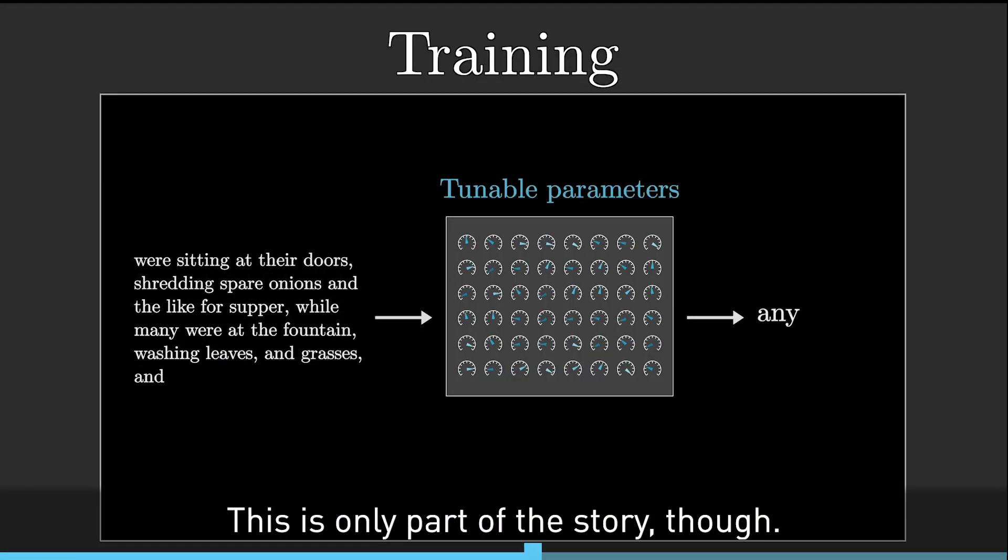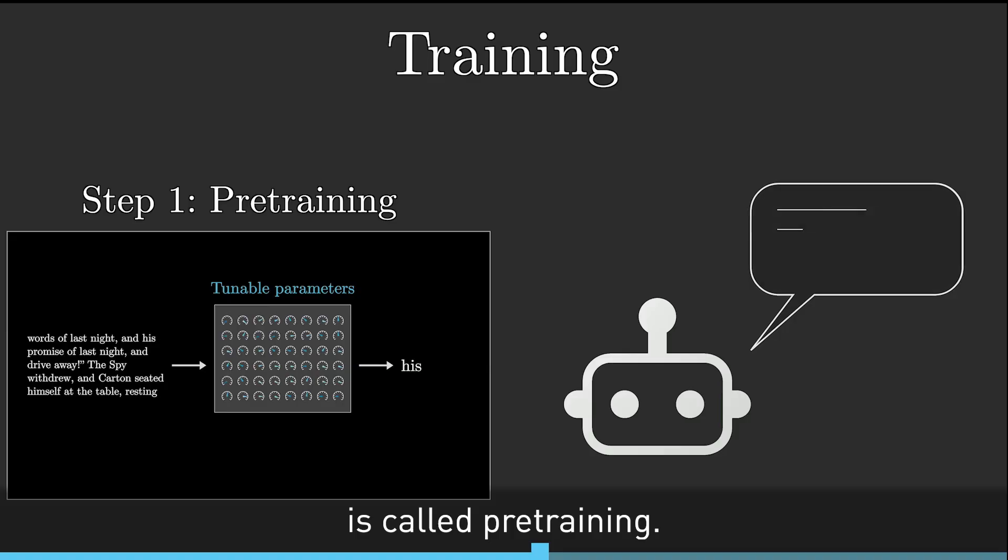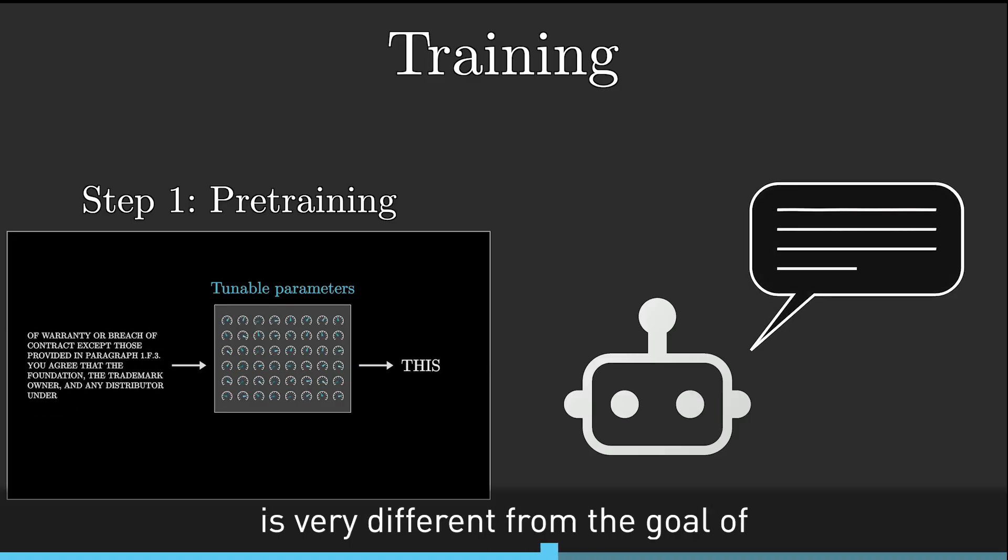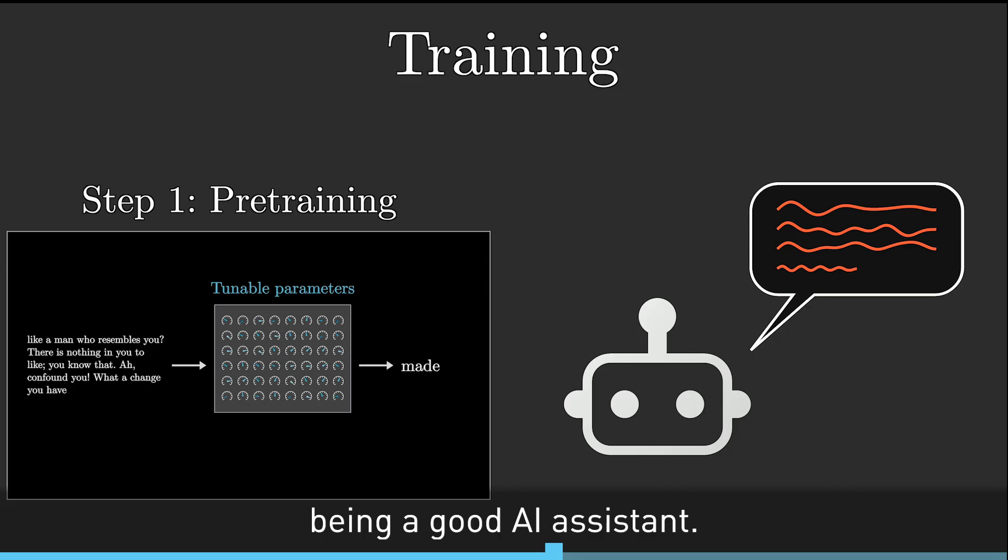This is only part of the story though. This whole process is called pre-training. The goal of auto completing a random passage of text from the internet is very different from the goal of being a good AI assistant. To address this, chatbots undergo another type of training, just as important, called reinforcement learning with human feedback.